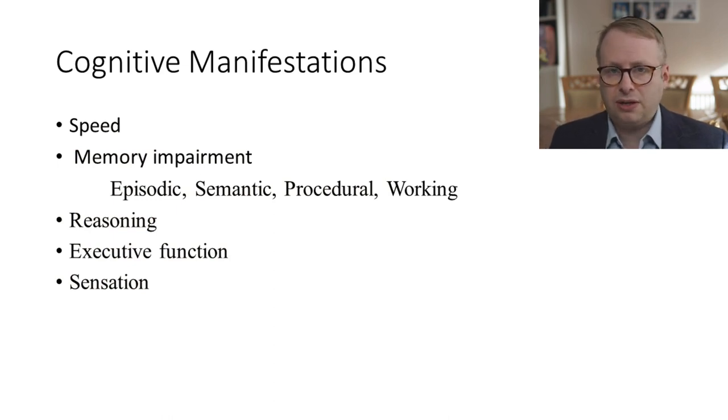In terms of cognitive manifestations, how does that reveal itself? We know that as people become older, the speed of thought decreases. Memory impairment across all different domains becomes more of a feature, whether it's related to events, related to language, tasks and so on. Ability to reason, executive function, various sensations, particularly our hearing, becomes impaired as we become older.